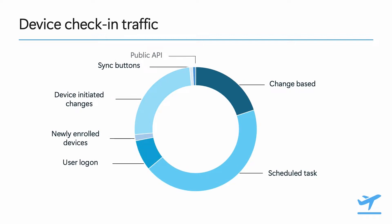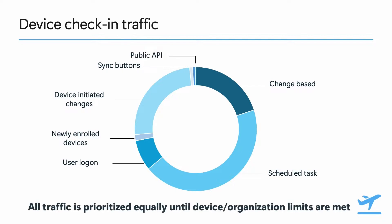A user logging into the device will trigger a device check-in. A change in the security state of the device, like a change in the firewall settings, will also trigger a check-in. Then yes, a subset of the maintenance check-ins do happen on a schedule, whether client or service initiated. An important point here is that until a device or organization hits their check-in limits, Intune does not discriminate between check-in types — we process all check-ins first come, first served.